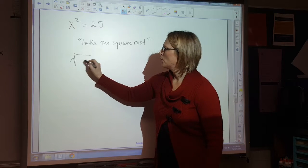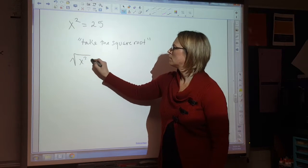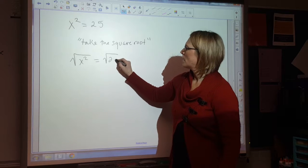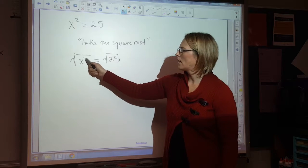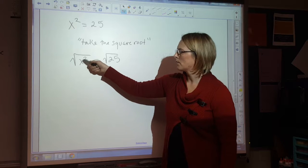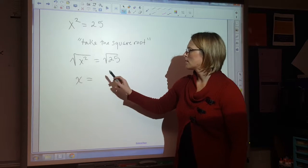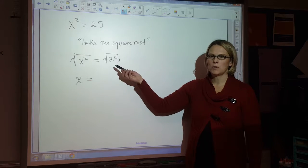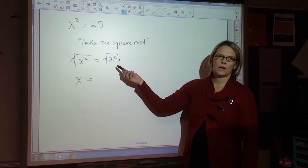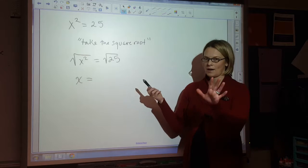So I'm going to put this radical over both sides. And now x squared, the square root of x squared makes the squared and the square root cross each other off. So I'm left with x. And then I'm looking for a number when multiplied by itself makes 25. So what times itself? Five. Yep.